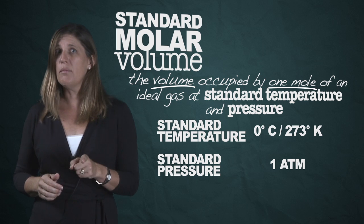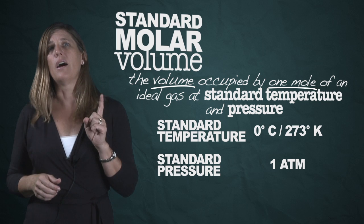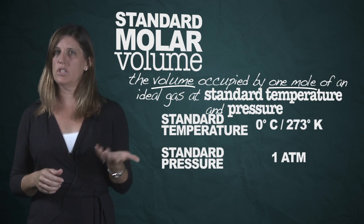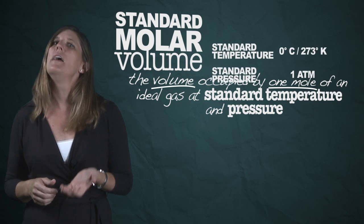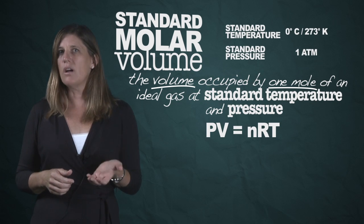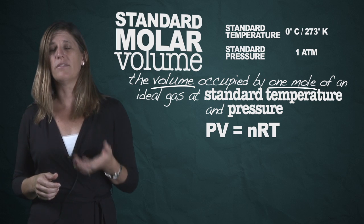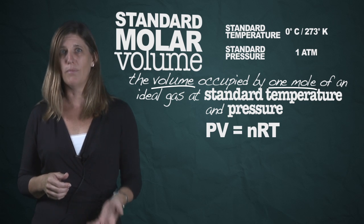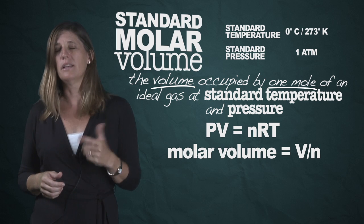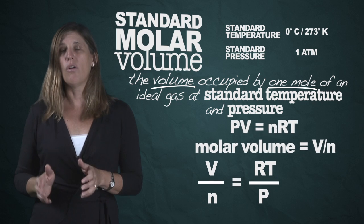You can memorize the value of the molar volume of an ideal gas, or you can just remember the ideal gas law: PV equals NRT. You can solve for the molar volume by solving for volume divided by one mole, which equals V divided by N — remember N is for moles — equals RT over P.